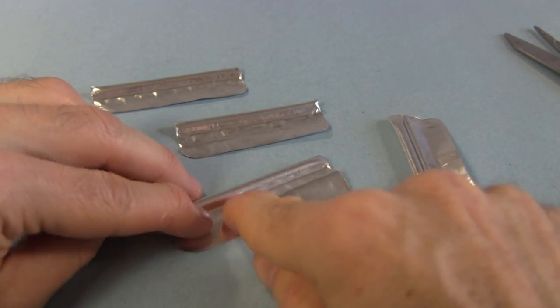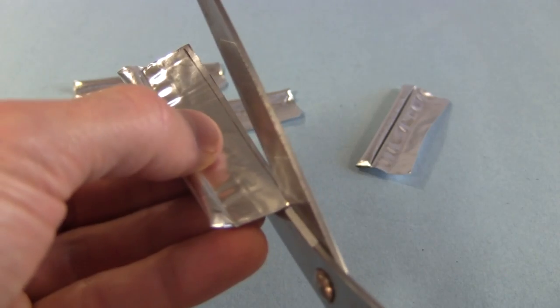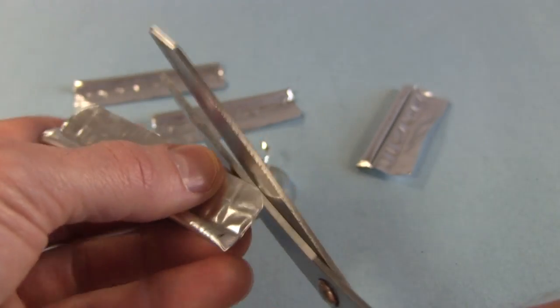I start with pieces that are larger than I need. Then I smooth them out and trim them. I take special care to make the sharp edge straight. I also make the corners round.